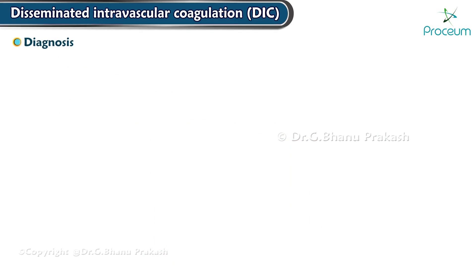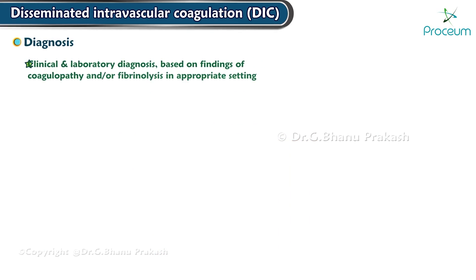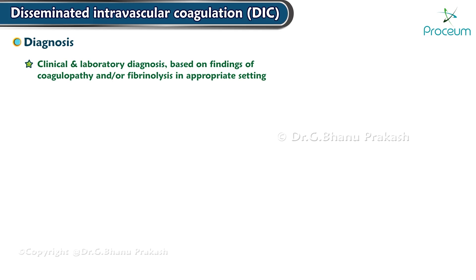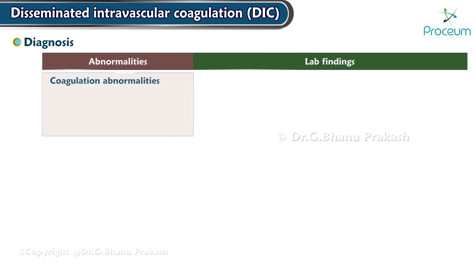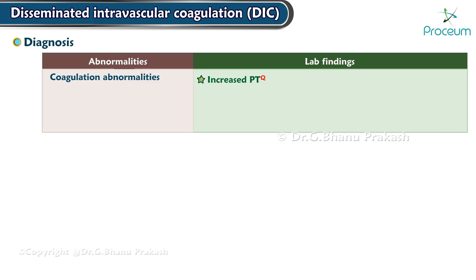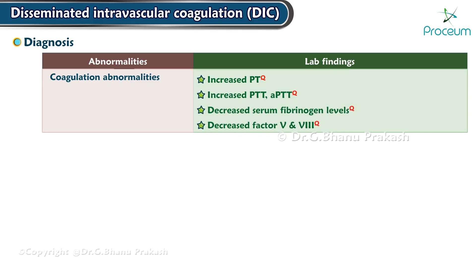Diagnosis. DIC is a clinical and lab diagnosis based on findings of coagulopathy and/or fibrinolysis in the appropriate setting. Coagulation abnormalities include increased PT, increased PTT and APTT, decreased serum fibrinogen levels, and decreased factor V and factor VIII.